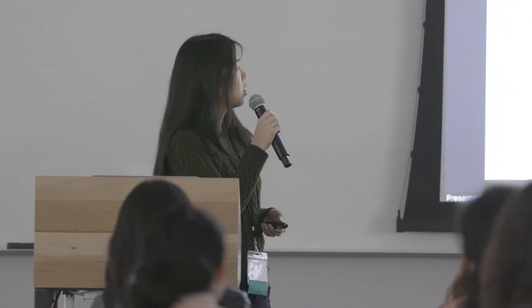In the case of an outage, our errors will rise, our successful requests will fall, and this will create what's called an anomaly in a time series. Currently, observability at Uber is kind of a mosh pit of services. If you're a service owner and you want to do white box monitoring, you need to first emit your metrics to our in-house telemetry system called M3, and then go to our in-house alert configuration system called U-Monitor to configure alerts — which involves setting reasonable thresholds on your metrics.